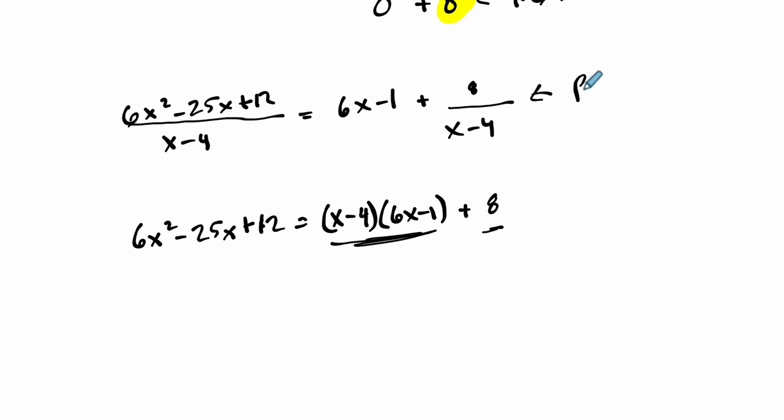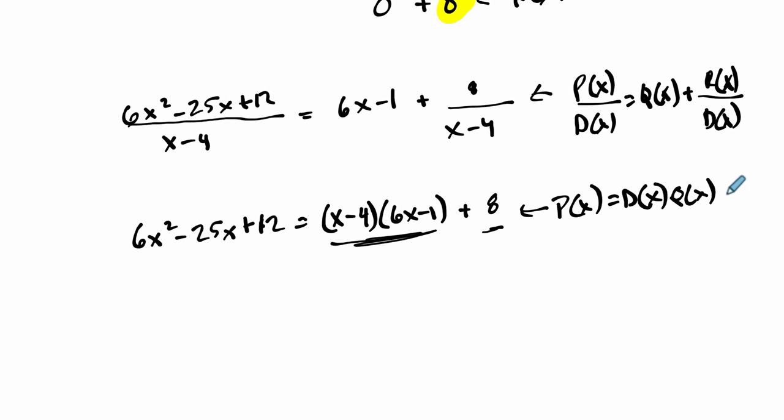And these are fitting the two definitions I shared before. And this one right here is the polynomial over the divisor equals the quotient plus the remainder over the divisor. And this one tells us that our polynomial function equals the divisor multiplied by the quotient plus the remainder. And these definitions, going back and forth between them can be really helpful. All right, thank you.